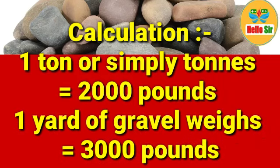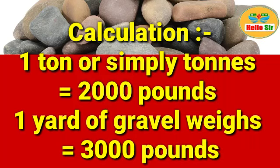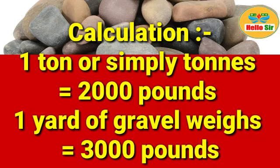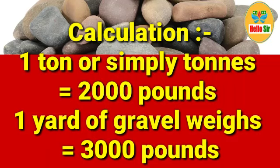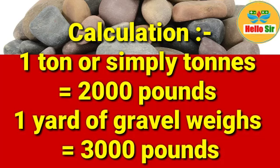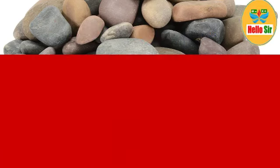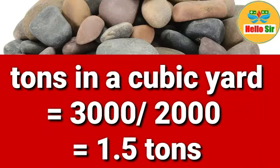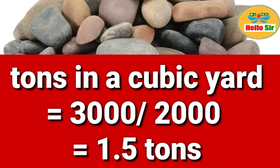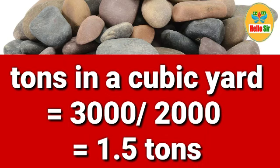Let us understand the calculation: how many tons in a yard of gravel? In the United States, United Kingdom, and some other countries, one ton equals 2,000 pounds, and one yard of gravel weighs 3,000 pounds. So, to convert: 3,000 divided by 2,000 comes out to 1.5 tons.